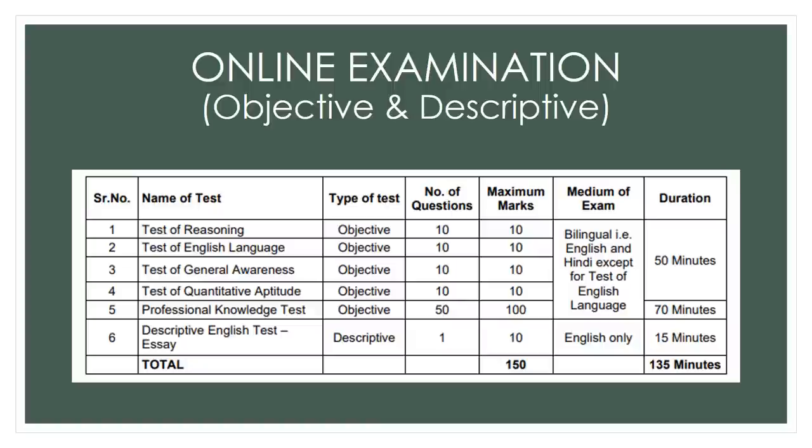After the handwriting sample, a duration of 50 minutes starts where you need to answer questions of reasoning, English language, general awareness, and quantitative aptitude. There are 10 questions of one mark each from each of these sections, and they are in bilingual language — the questions can be answered either in English or Hindi.